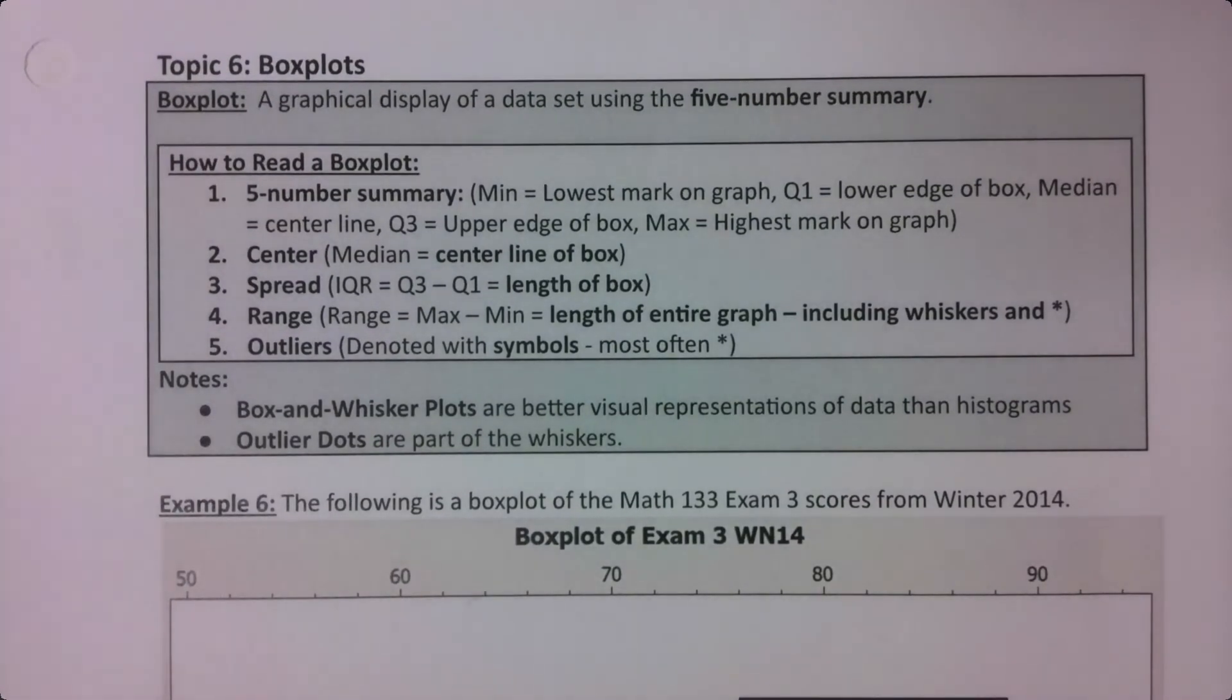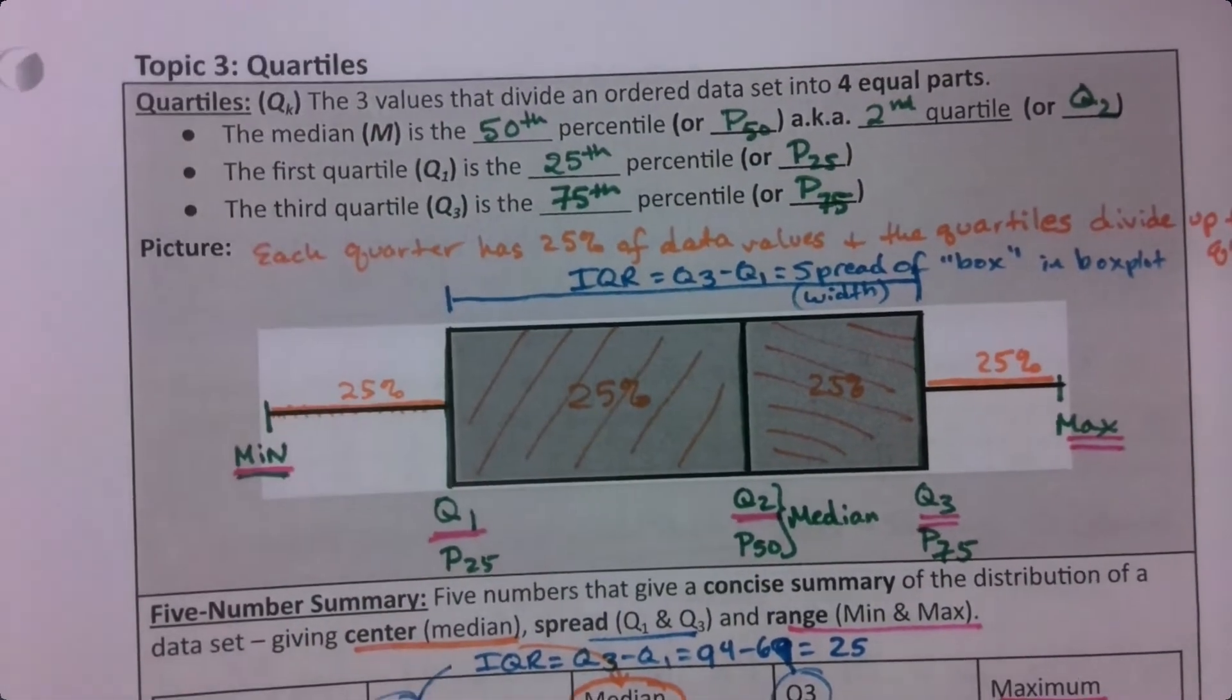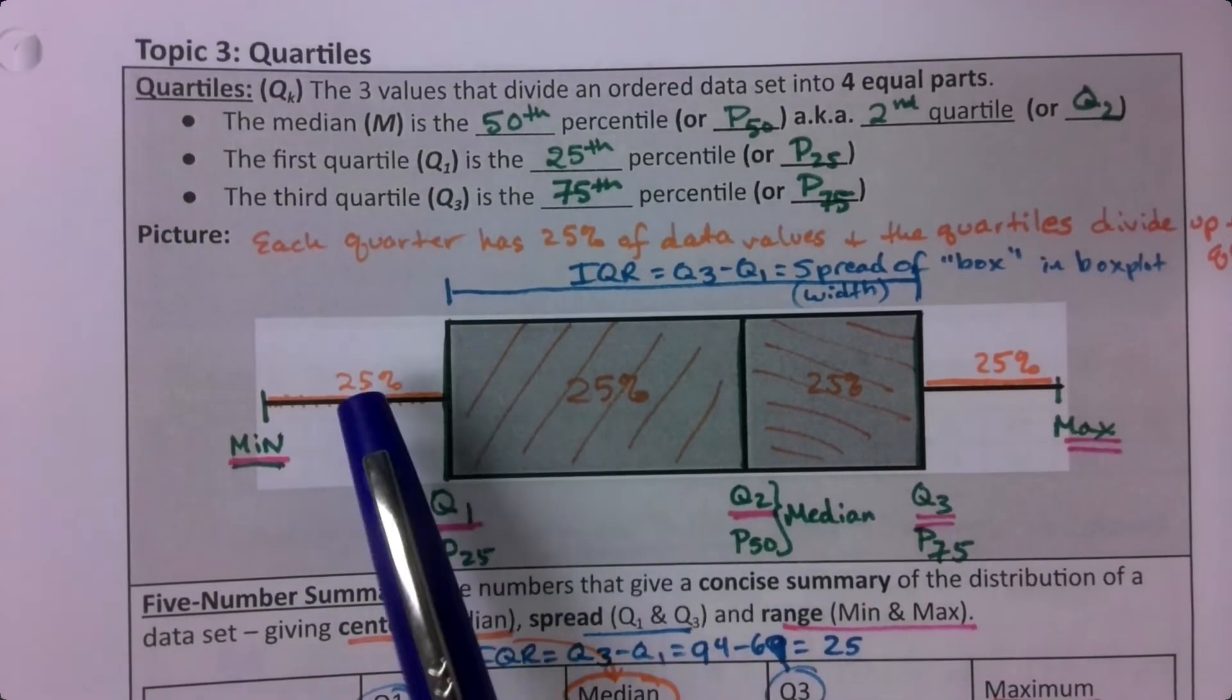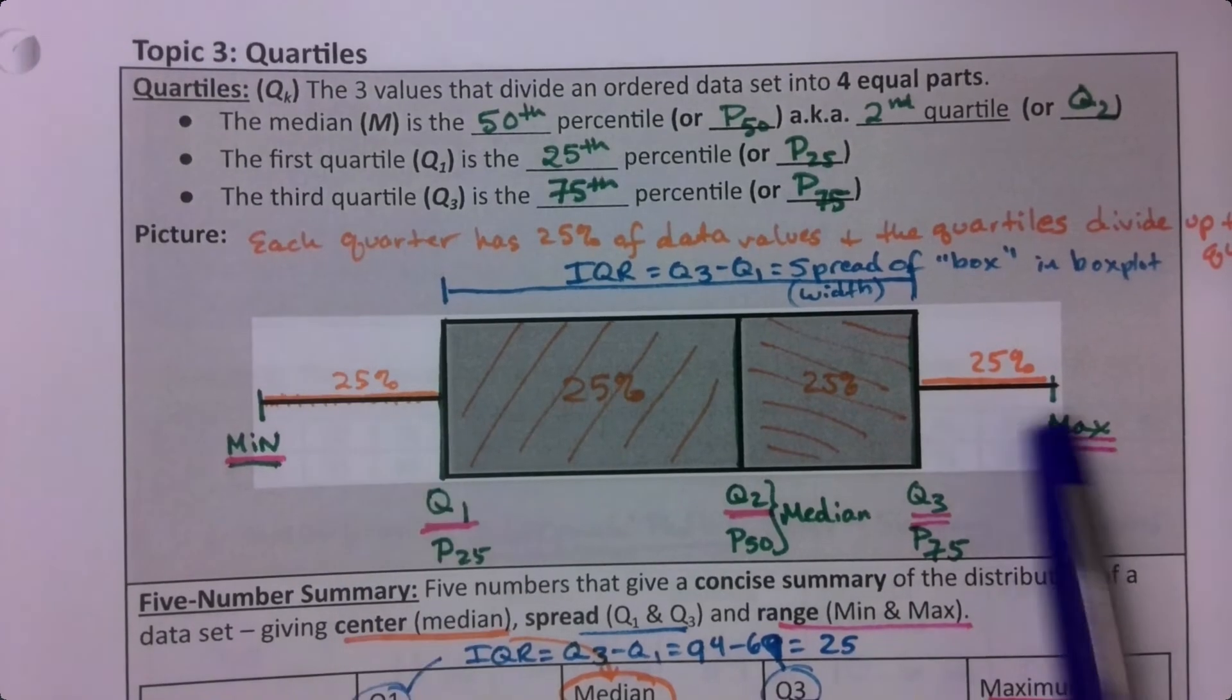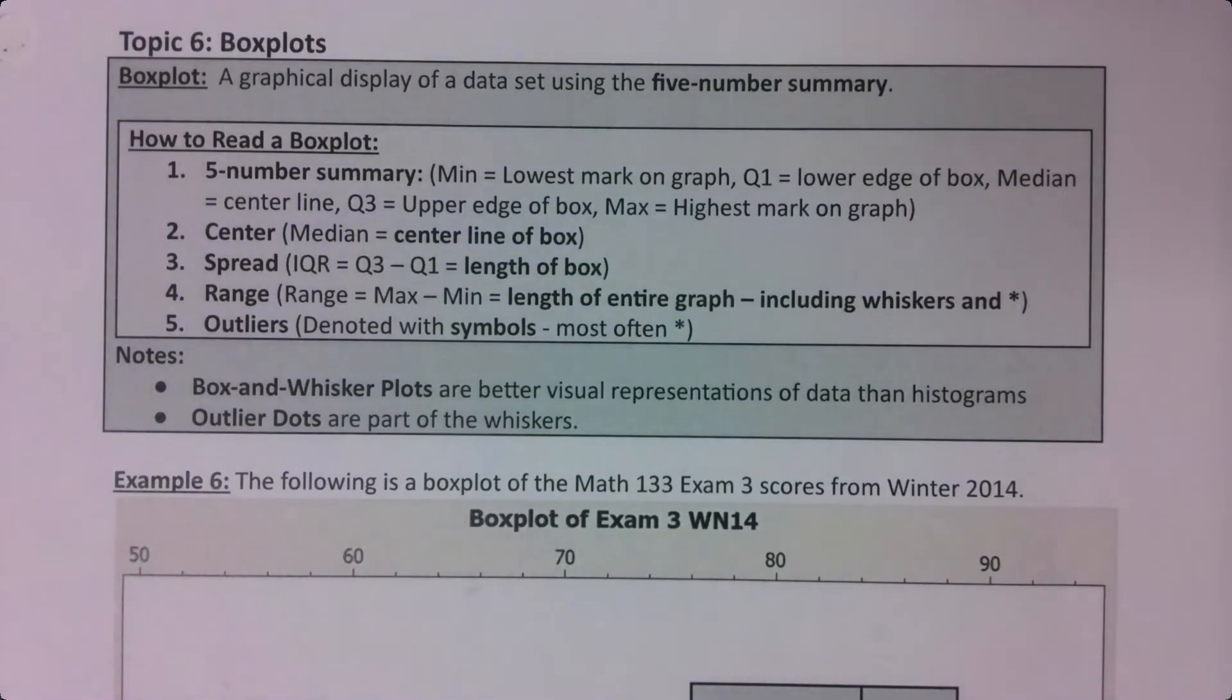In a couple previous pages we've had a picture that we've been flirting with, which is the picture of the quartiles in this kind of box with little lines on either side of it. It's called a box and whisker plot, and that's technically section 3.5.